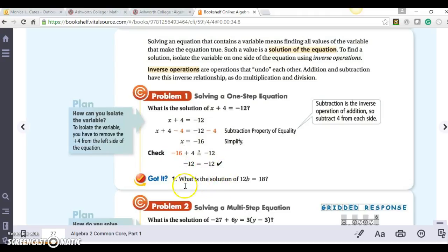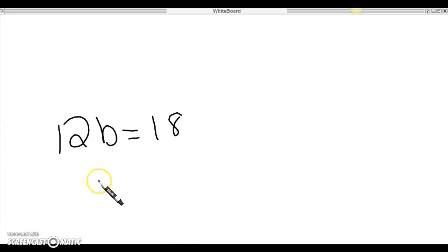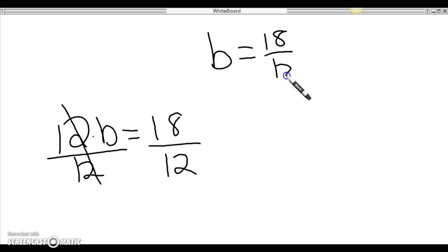So let's look at Got It number one: 12B equals 18. So I am multiplying 12 and B together. I want to get my variable alone. So I'm going to do the opposite or the inverse operation, which is divide. So divide both sides by 12 and I get B is equal to 18 over 12. I want to reduce that. So I know that both of them evenly go into 6. So 3 over 2. That's one way of writing it, or I can write it as 1 and 1 half, or I can write it as 1.5.